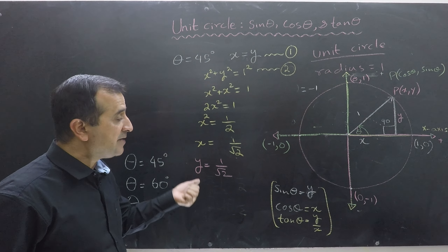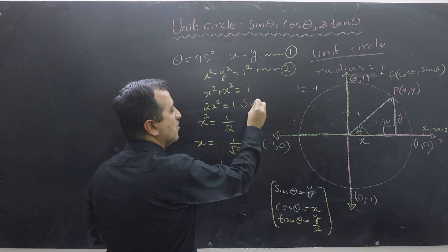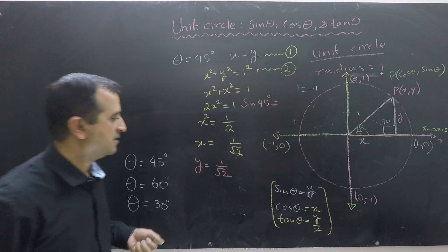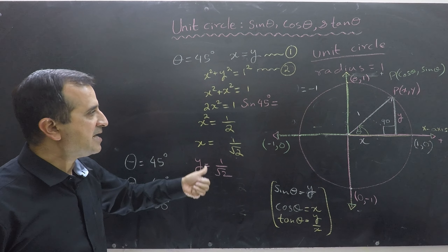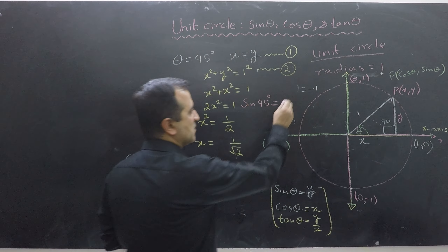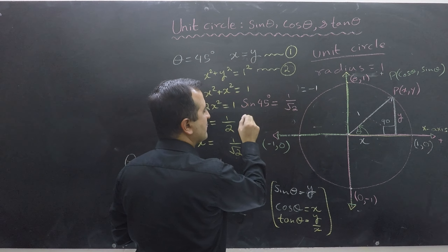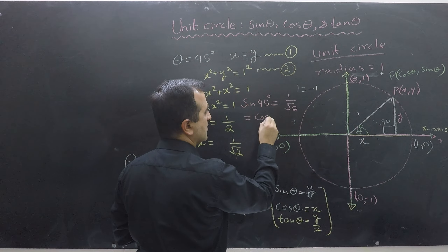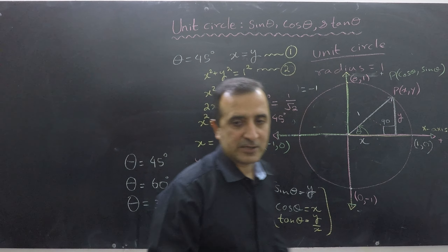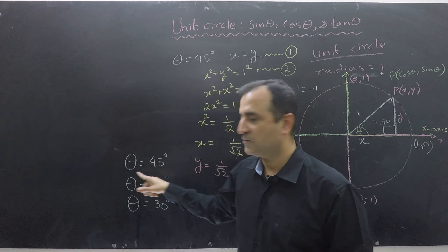So sin(45°) equals y, which is 1/√2, and cos(45°) equals x, which is also 1/√2. Using this trick we have found both values for theta equals 45 degrees.